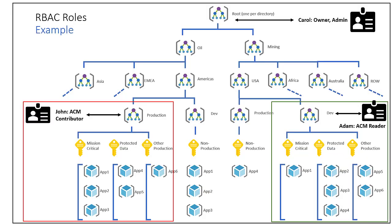Here is an example of how RBAC can be used. Carol is an admin owner and can view and configure cost management details at the root level management group and all worldwide child management groups underneath it. John works for the oil subsidiary in the Americas and has been given Cost Management Contributor privileges for the production management group in that branch, including all subscriptions and resource groups underneath — he can set budgets, configure alerts, and create exports. Adam is a developer in the mining subsidiary in the USA with only ACM Reader privileges for the development management group, so he can view ACM data but cannot change budgets or configure alerts.